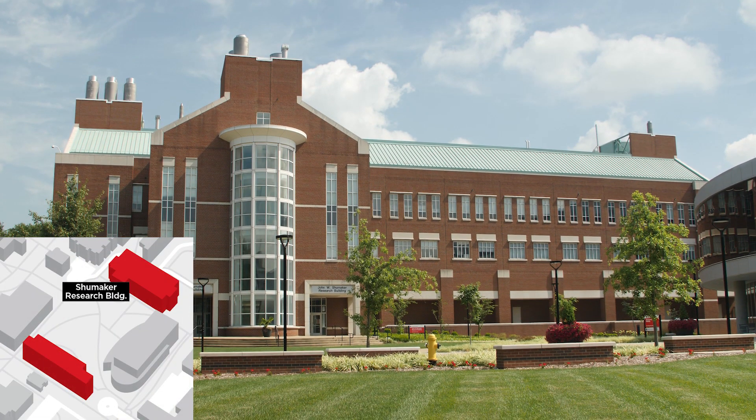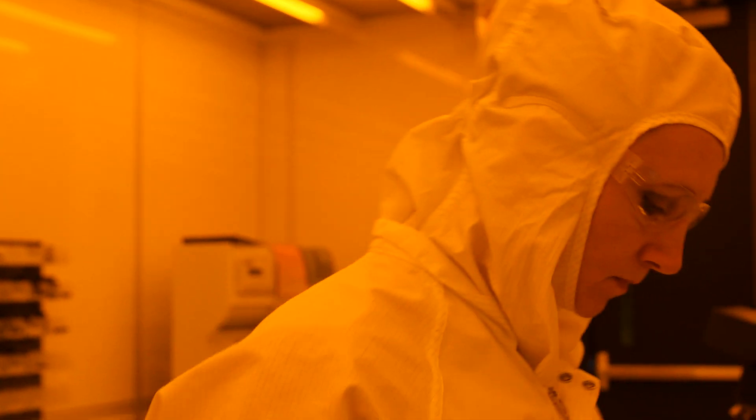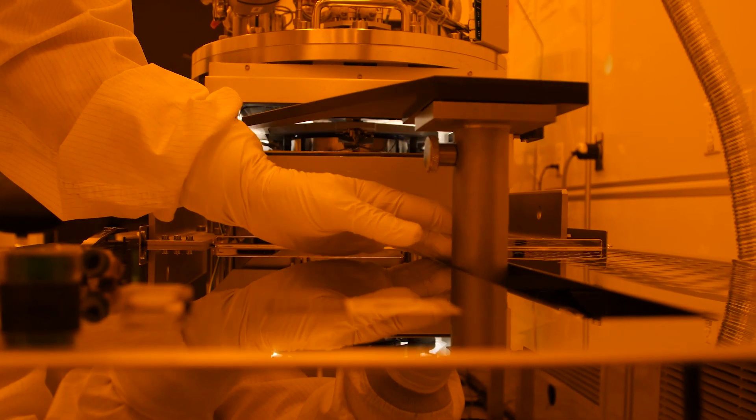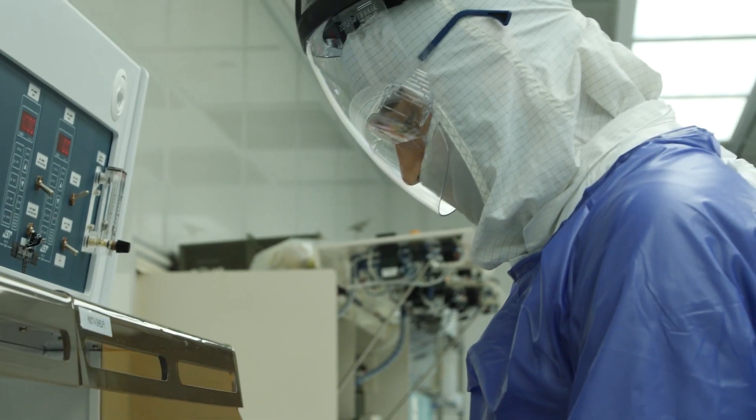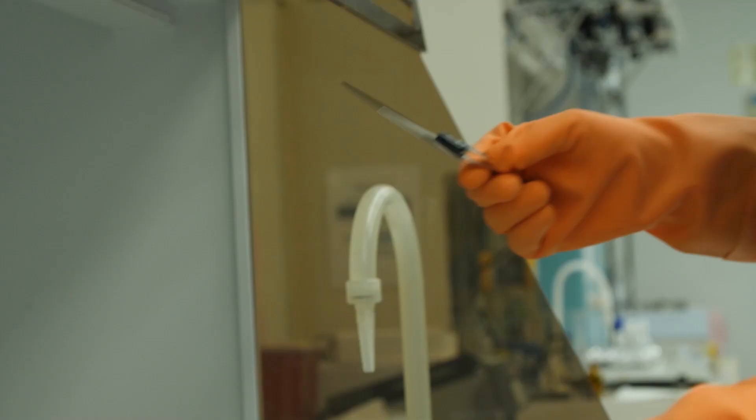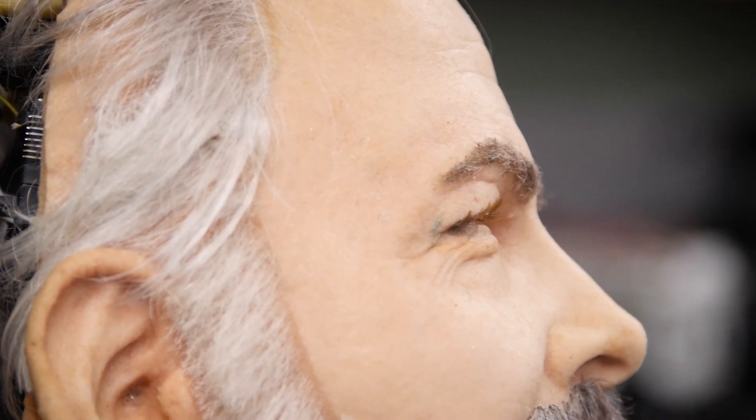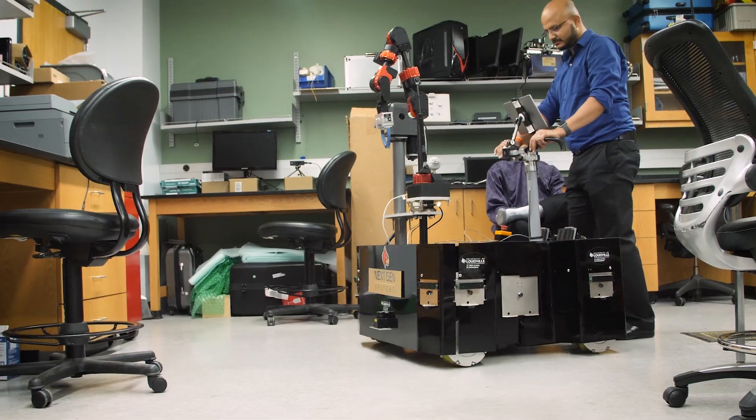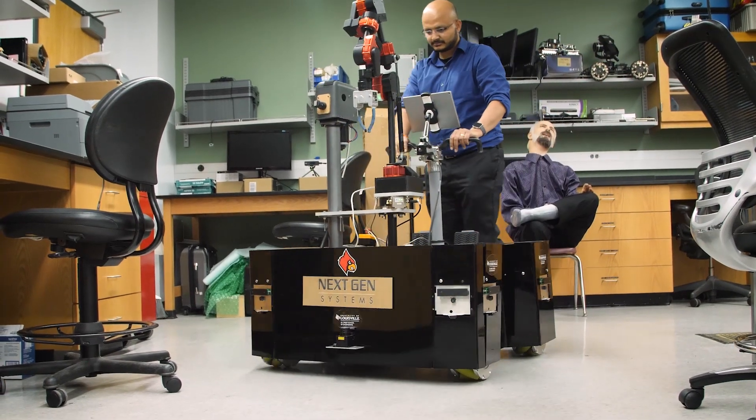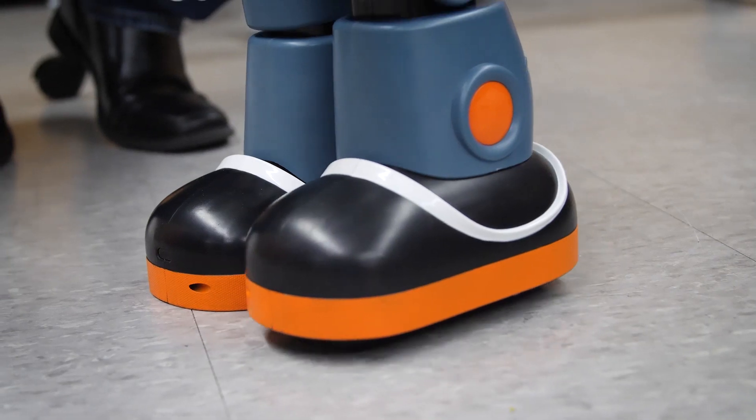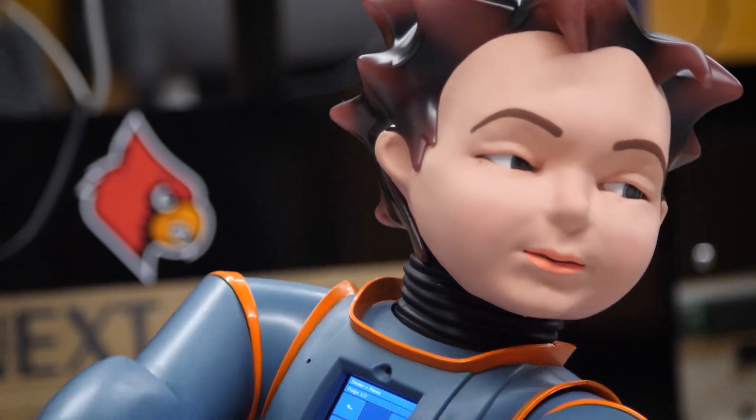You'll find a lot of labs at the Shoemaker Research Building, one of which is the Micro Nano Technology Center. It's actually a clean room because the technology they make in there is so small that dust particles can actually disrupt the research. The robotics research lab is also housed here. They develop technology for robots to interact with humans. Some of the things they're working on is making robots that can help children with autism recognize different facial expressions and emotions.